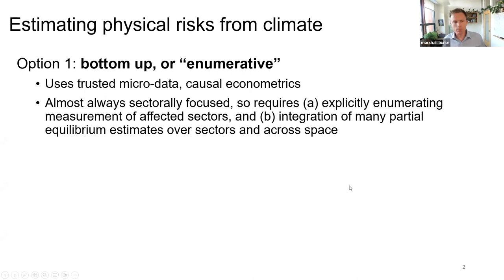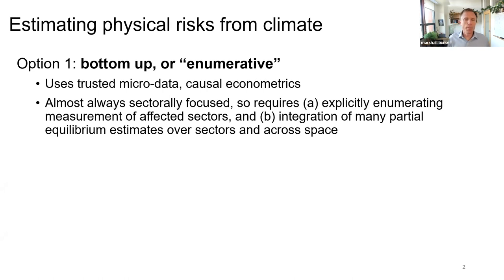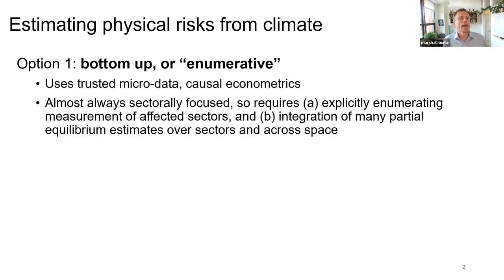There are two basic approaches you're going to see. The first — the bottom-up or enumerative approach — uses trusted microdata to go sector by sector and get really high quality causal estimates of climate impacts: in mortality, agriculture, labor supply. These are great — high quality microdata, strong econometrics, great estimates.